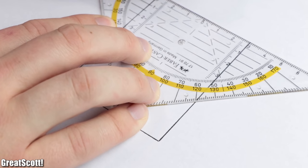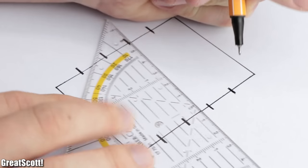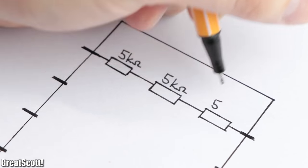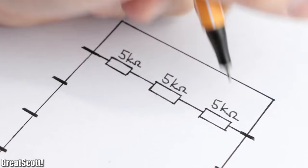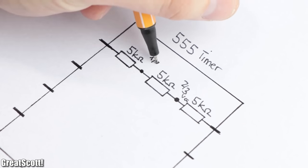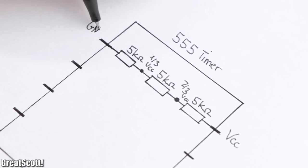First off, let's inspect the insides of the dual inline package of the 555 timer IC. Pin 1 and 8 are connected through three 5 kilo ohm resistors in series, which does not only give this iconic IC its name, but also creates a voltage divider since pin 8 is connected to the supply voltage and pin 1 to ground.